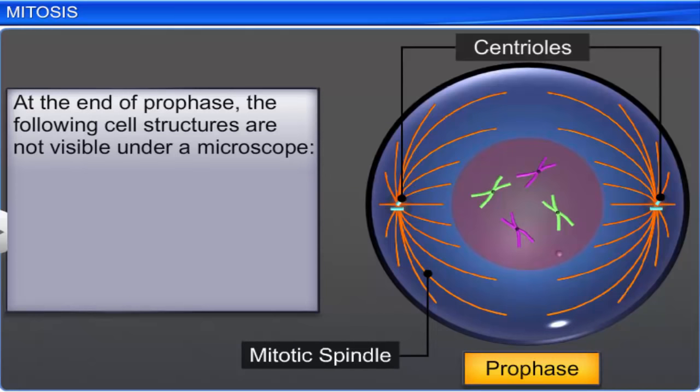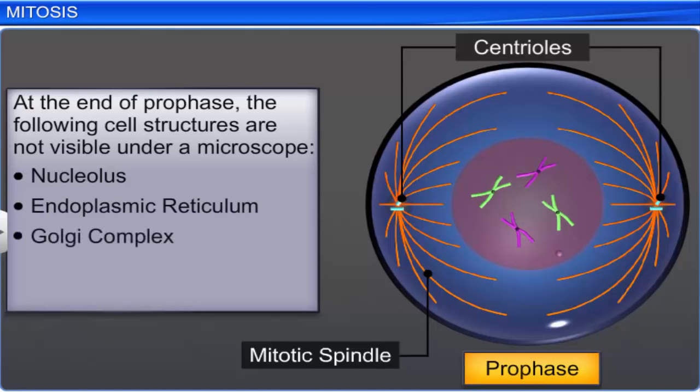At the end of prophase, the nucleolus, endoplasmic reticulum, Golgi complexes, and the nuclear envelope are not visible when viewed under a microscope.